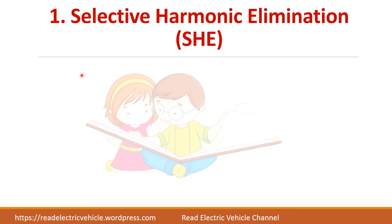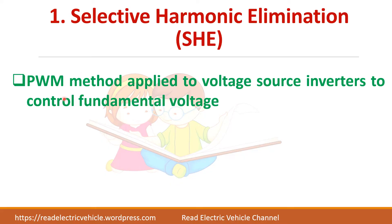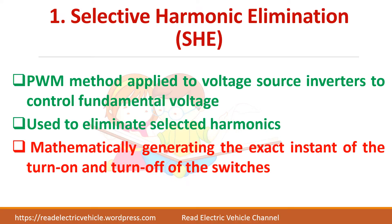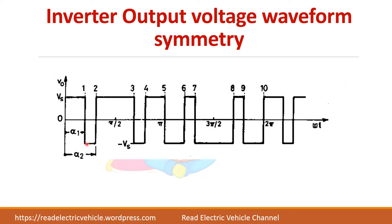The first method is selective harmonic elimination. In this method, we can control the fundamental voltage as well as eliminate a particular harmonic — say, the third harmonic or fifth harmonic, or both third and fifth. We have to calculate the instants of turning on and off of the switch so that a particular harmonic can be eliminated from the inverter output. First, we must ensure the inverter output voltage waveform satisfies quarter wave symmetry, so that we can easily eliminate the even harmonics.